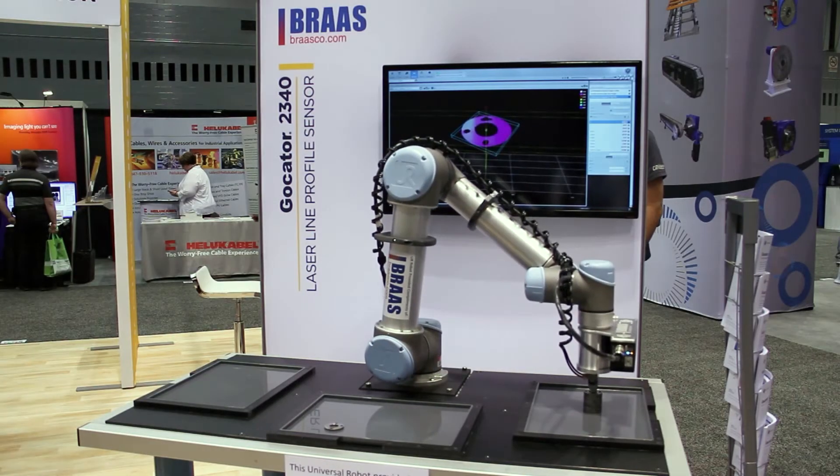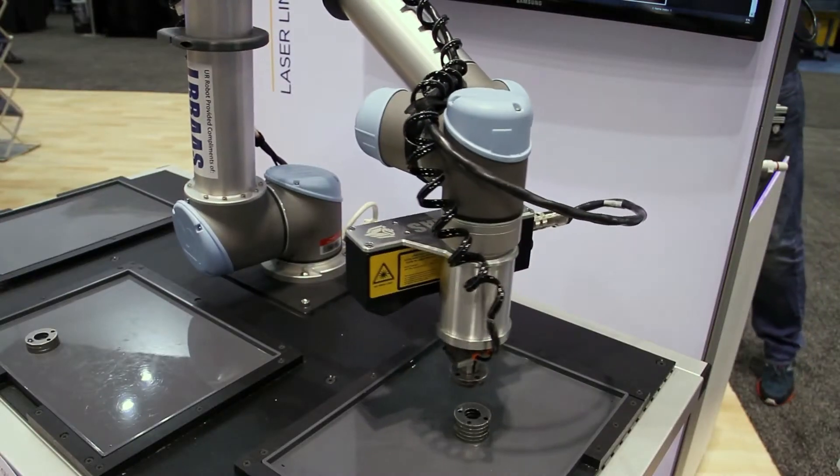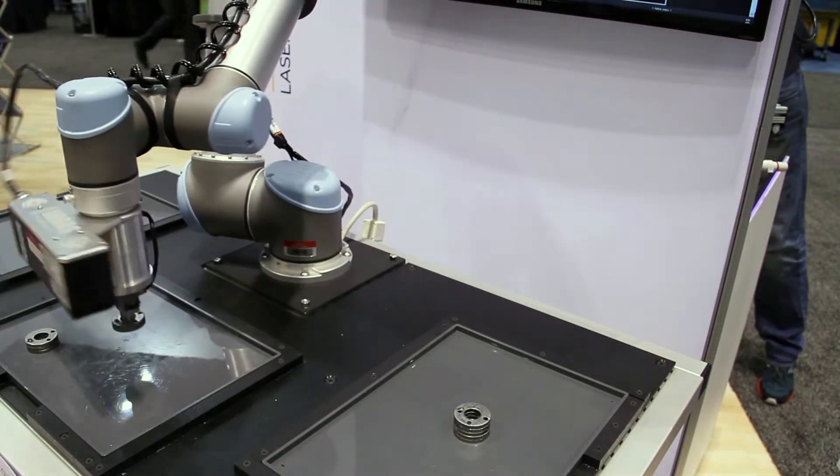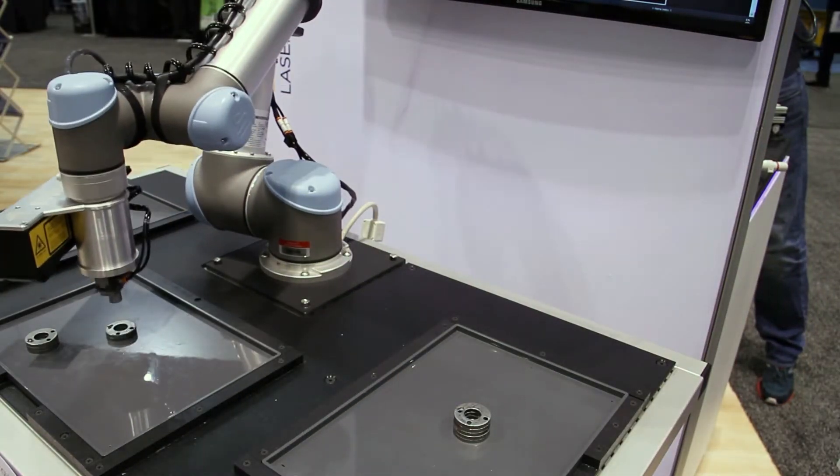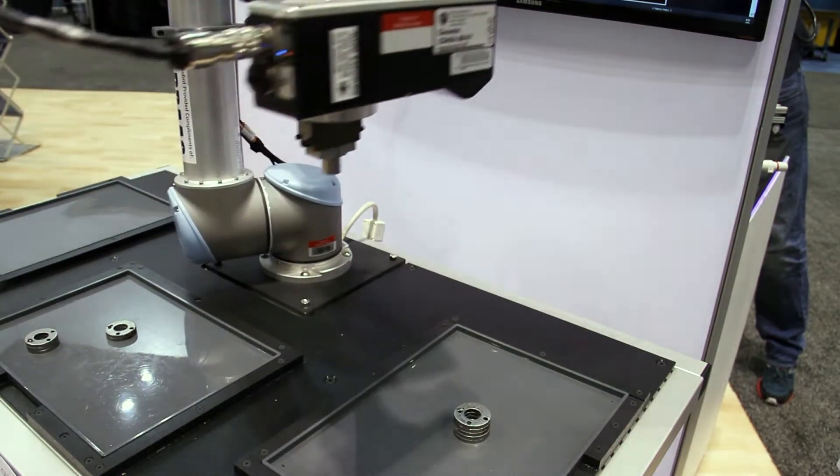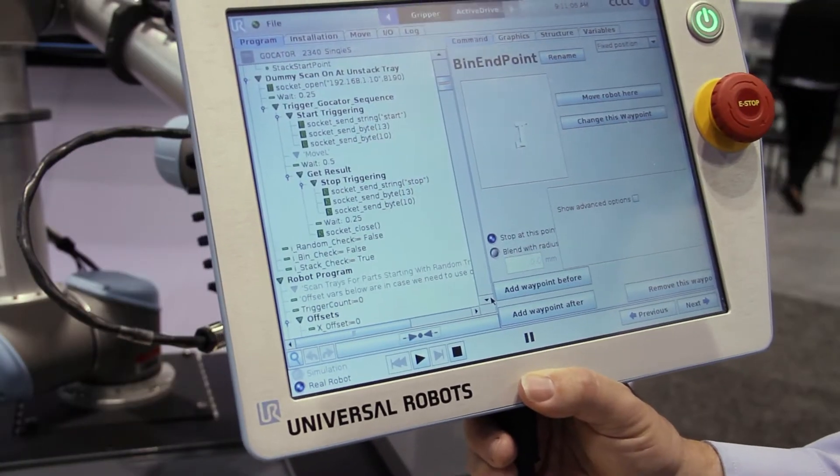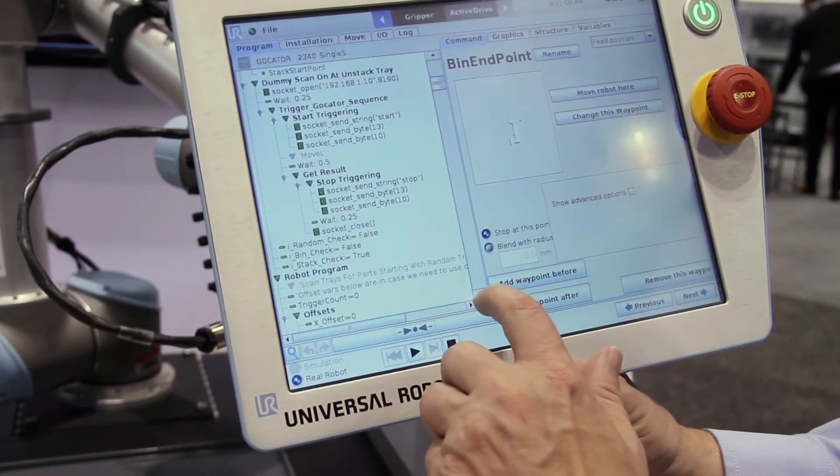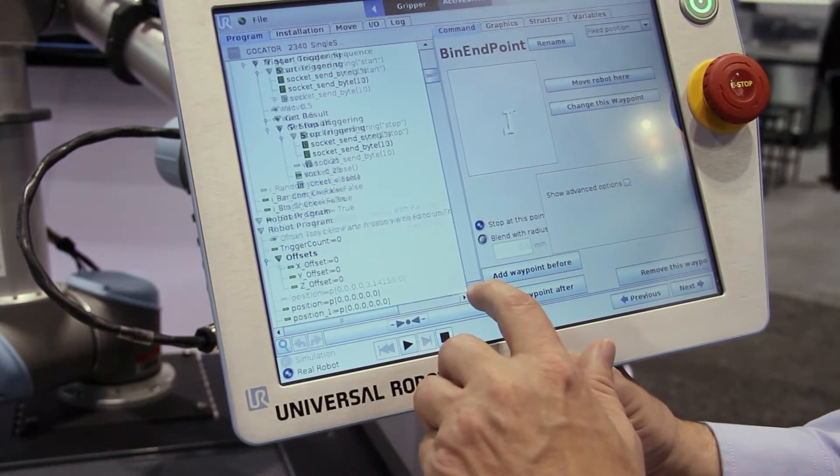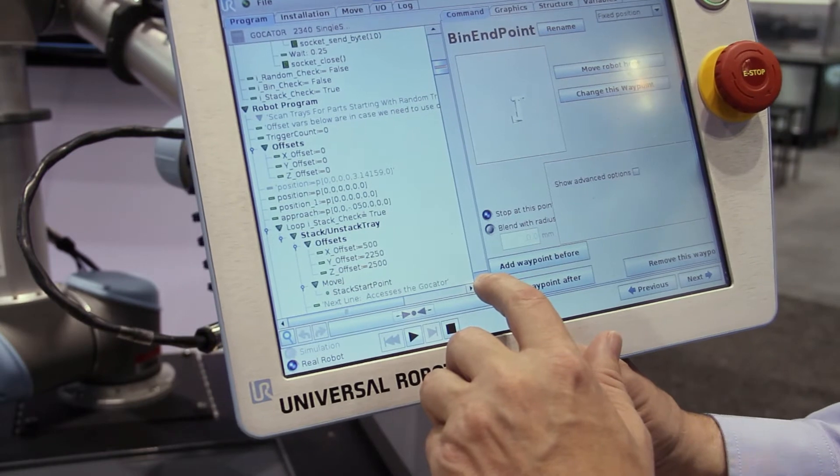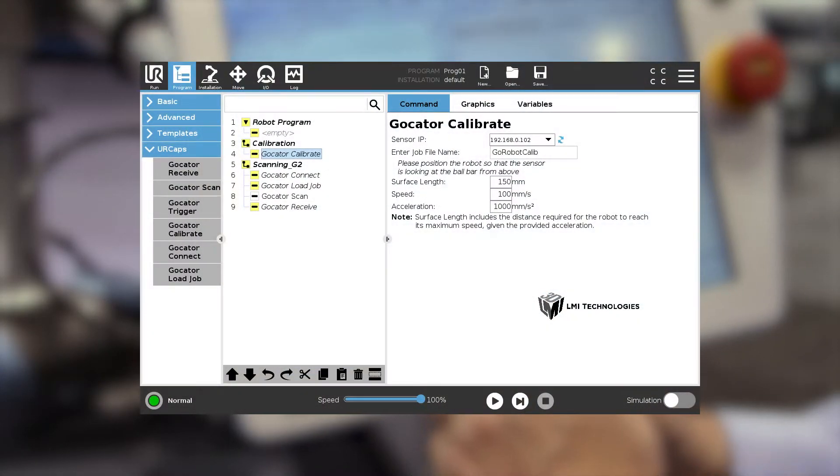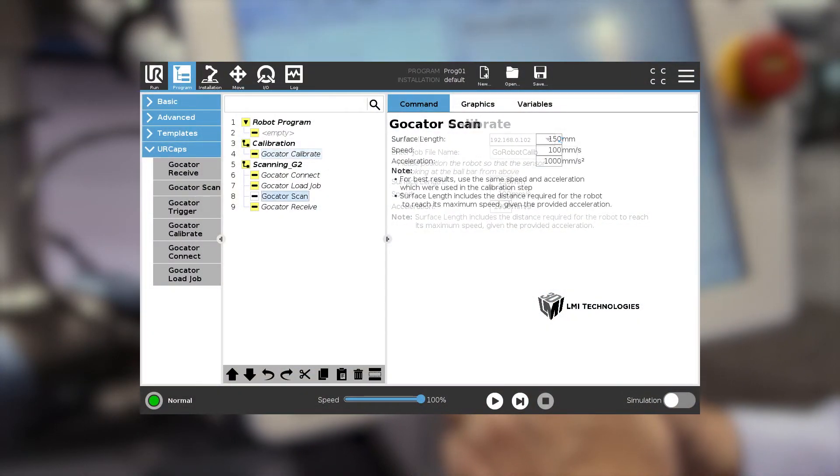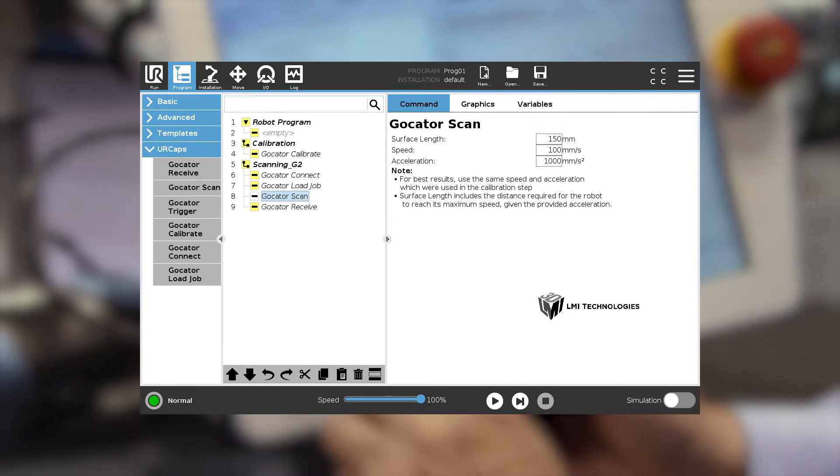GoCator 3D laser line profilers are easily mounted onto the UR robot flange using a metal plate. Connect the sensor to a robot controller or PC application to perform sensor hand-eye calibration using the GoCator UR Cap plugin and implement your desired robot movement. The GoCator UR Cap is available for download from LMI's website.